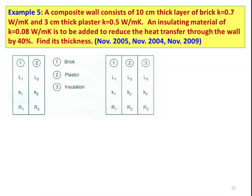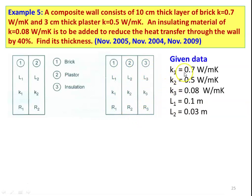Example number 5: A composite wall consists of a 10 cm thick brick layer (K = 0.7 W/m·K), a 3 cm thick plaster layer (K = 0.5 W/m·K), and an insulating material (K = 0.08 W/m·K) is to be added to reduce heat transfer through the wall by 40%. Find the thickness of the new insulation. Given: K1 = 0.7, K2 = 0.5, K3 = 0.08 W/m·K; L1 = 0.1 m, L2 = 0.03 m; L3 is the unknown to be calculated.